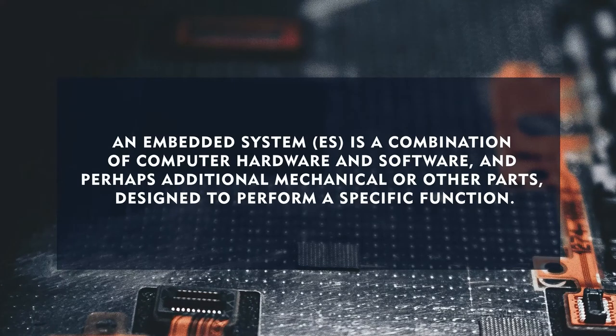Before going ahead, let us learn the definition of the Embedded System. An Embedded System is a combination of computer hardware and software, and perhaps additional mechanical or other parts, designed to perform a specific function. This particular system consists of the hardware part like the chip and the IC, and the embedded software like the firmware.